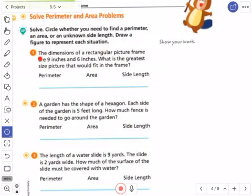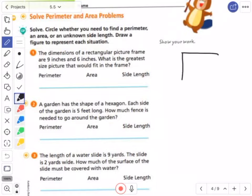So number one: the dimensions of a rectangular picture frame are nine inches and six inches. What is the greatest size picture that would fit in the frame? Okay, so a picture frame is nine inches by six inches. I'm just going to start by drawing a picture. This is really what I recommend for all of you to start with - start with your picture for your proof. So it's nine inches by six inches.